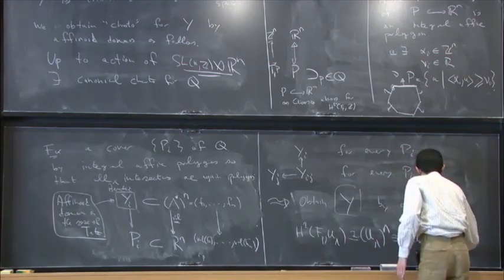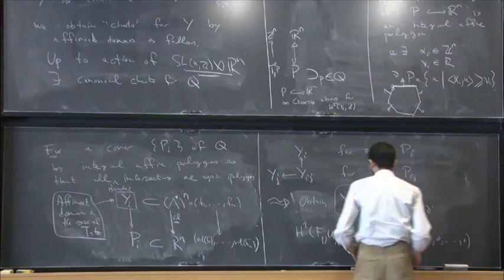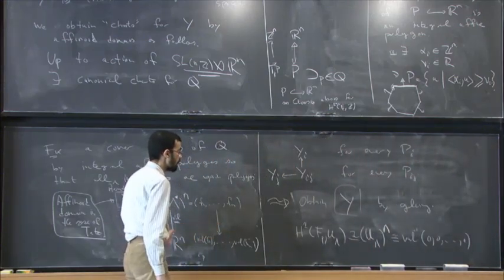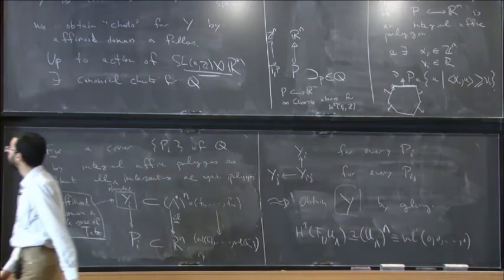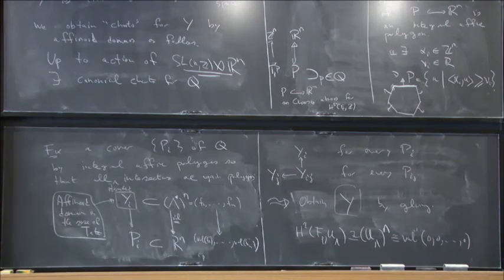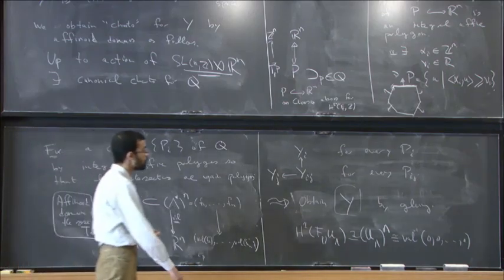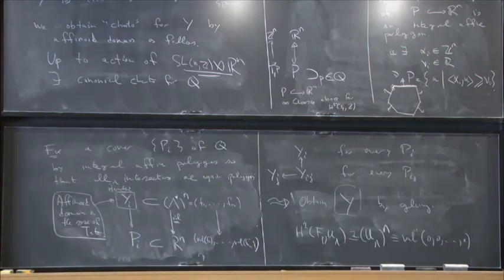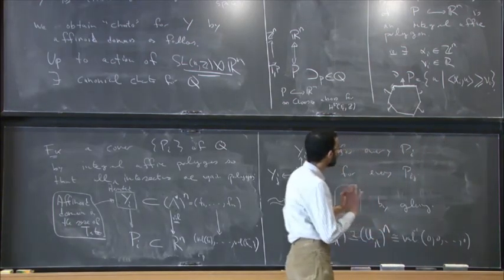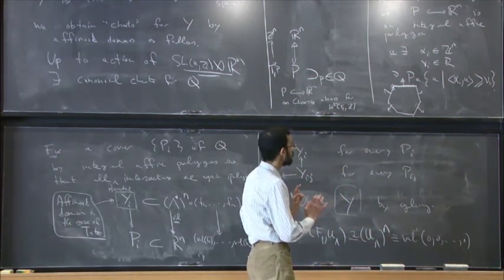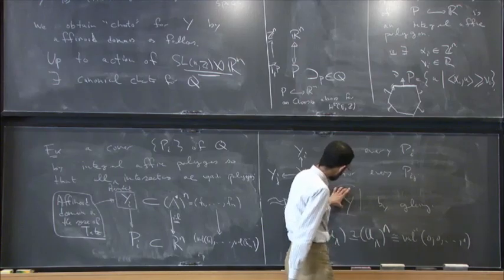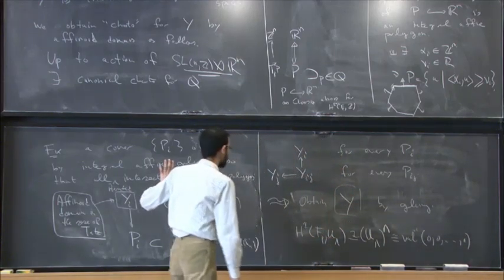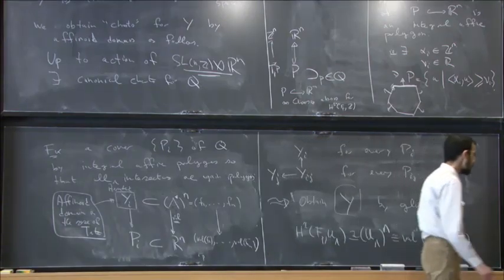So this is the space we're talking about. When we want to do mirror symmetry in a setting where we don't have convergence, you could do very delicate things working over the Novikov ring λ_0. But if we just want to prove an equivalence of categories, the likeliest place we can manage to do so is over the Novikov field. Coherent sheaves on this Y should correspond to the Fukaya category, because those are the two things that can be most easily compared.